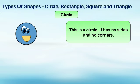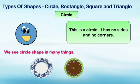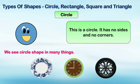Now let's see a few examples of circle. We see circle shape in many things. For example, a plate — you can see that a plate is circular in shape, similar to a circle. Next is a wall clock, which is also similar to a circle, and a wheel, which is also similar to a circle. So these all are examples of circle.